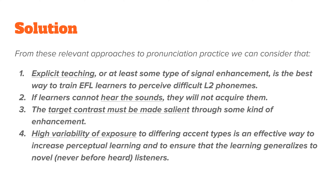For anyone learning a new skill, if you over-emphasize things it does make it a lot easier to identify the correct characteristics. Point number four: high variability of exposure to differing accent types is an effective way to increase perceptual learning and to ensure that the learning generalises to novel, never-before-heard listeners. If students are able to hear many different speakers of many different accent types of an L2, they're better able to develop that perceptual awareness and better able to create a sound map of these patterns.